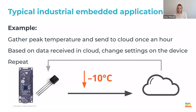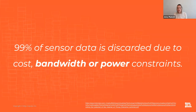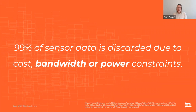We're only getting 24 data points — one peak temperature per hour. There are 60 minutes per hour, so we're missing a lot of data. From our industrial IoT experience, 99% of sensor data is currently discarded due to cost, bandwidth, or power constraints. We don't want to send all 24 hours of data for every second because that uses too much power, too much bandwidth, and costs too much.